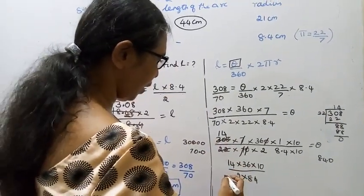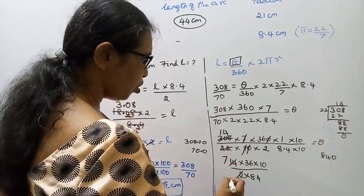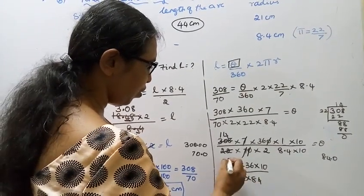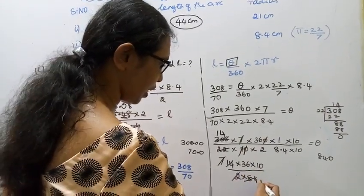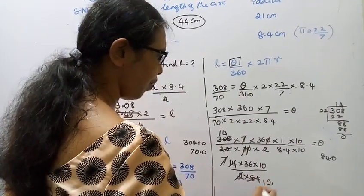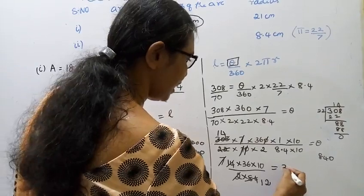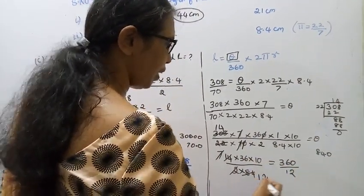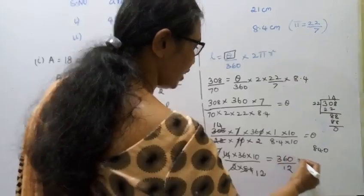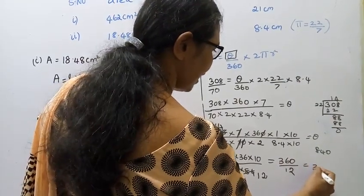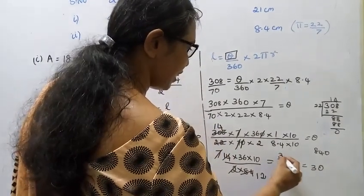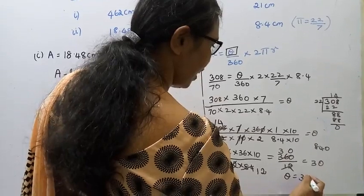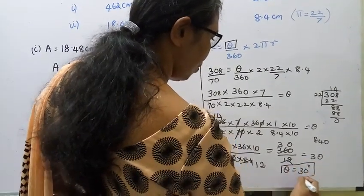Cancel: 2 sevens are 14, 7 eights are 84 — cancel. 7 ones are 7, 7 twos are 14. Then 360 divided by 12: 12 threes are 36, remainder 0. Theta equals 30 degrees.